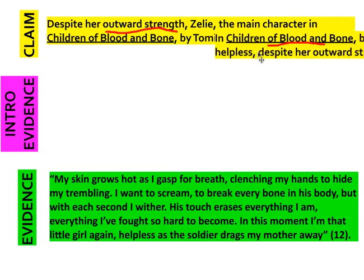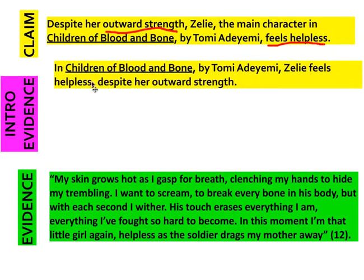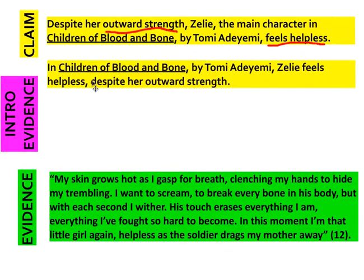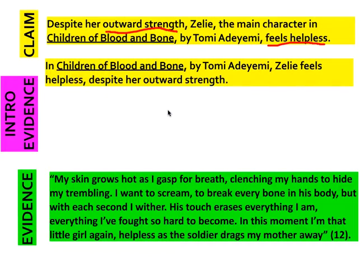An easy way to do that is just to put it right at the beginning of the first sentence. Here's an example: In Children of Blood and Bone by Tomi Adeyemi, Zelie feels helpless despite her outward strength. So an easy place to put it is just right at the beginning of that first sentence.